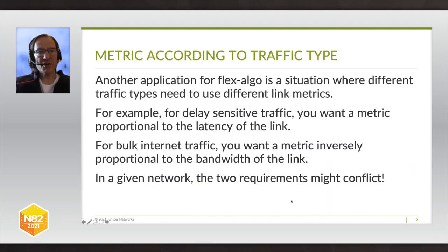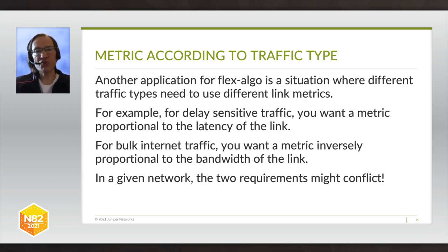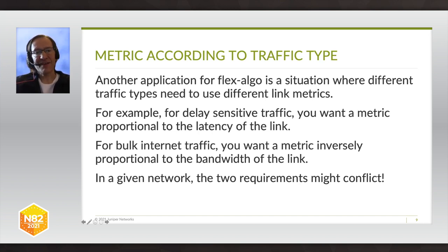In some cases, you might have different types of traffic using your common network infrastructure, and those different traffic types might have different goals in terms of what metric they need. A classic example: delay-sensitive traffic should use a metric proportional to link latency, while bulk internet traffic should use the cheapest cost path — a metric inversely proportional to bandwidth. If you're merging networks, these two requirements might conflict. With a single IGP topology, you can't set a metric on each link to satisfy both different styles of traffic. This is where Flex-algo can help a lot.